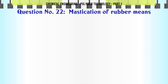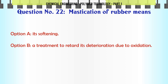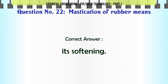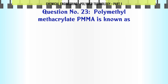Mastication of rubber means: A. Its softening, B. A treatment to retard its deterioration due to oxidation, C. Improving its curing rate, D. Depression of its freezing point. The correct answer is its softening.